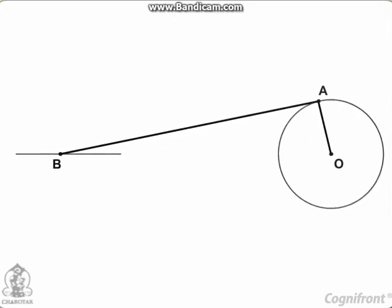The locus of any other point, say P, on the connecting rod will be neither a circle nor a straight line and can be determined by the following steps.